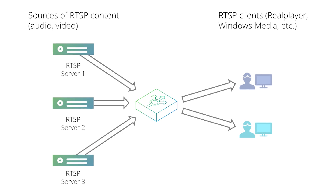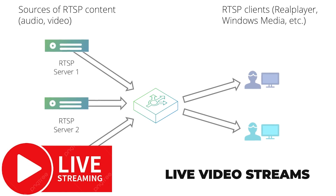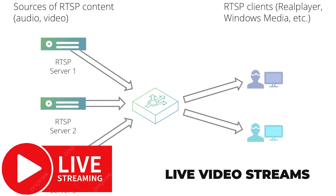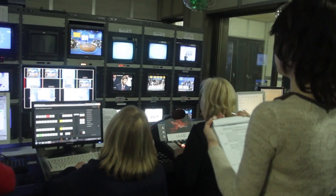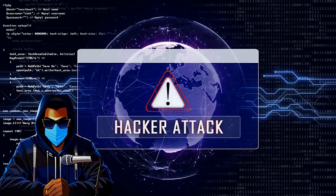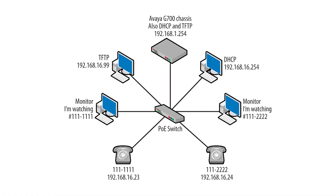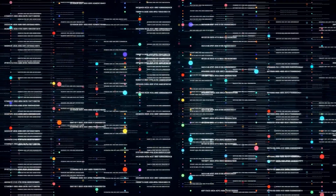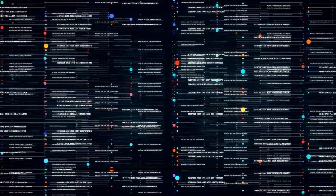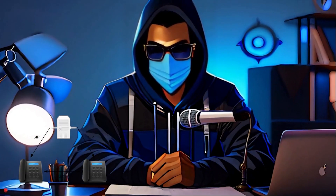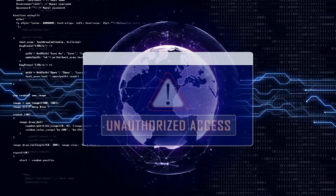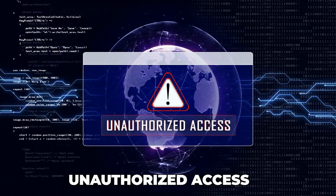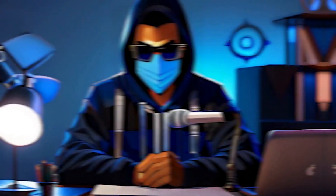RTSP, or Real-Time Streaming Protocol, is the director behind live video streams, telling the cameras when to start and stop. It's essential for things like security cameras and live broadcasts, but if hijacked, an attacker could tap into your video feeds. RTP, the Real-Time Transport Protocol, carries the actual video and audio data. SRTP adds security to the mix, putting bodyguards around those actors to prevent unauthorized access to your streams.